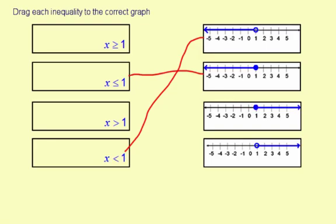The next graph, 1 is included, closed circle. And this time, it's the values going to the right. The values greater than 1. So this means x is greater than or equal to 1. And that's this one right here.